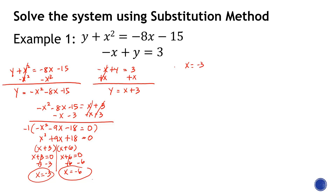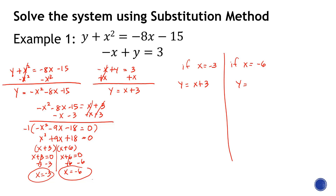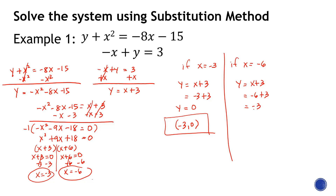If x equals negative 3, substitute into the easier equation — the linear equation. Negative 3 plus 3 equals 0, so y equals 0. The first solution is the point (negative 3, 0). For x equals negative 6: negative 6 plus 3 equals negative 3, so y equals negative 3. The second solution is (negative 6, negative 3). That's the first example.